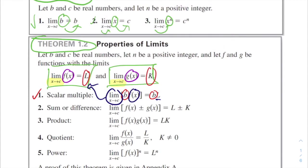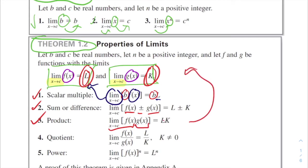The sum or difference rule allows us to add or subtract two limits: the limit as x approaches c of f(x) ± g(x) equals L ± K. The product rule lets us multiply limits together: the limit as x approaches c of f(x)·g(x) equals L·K.